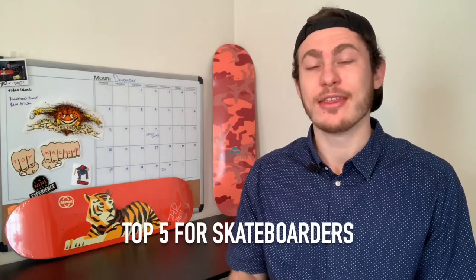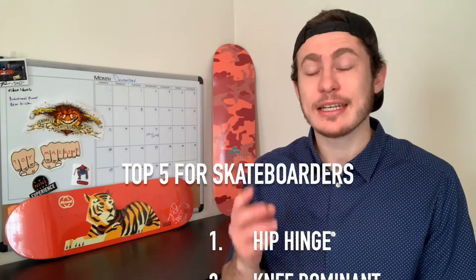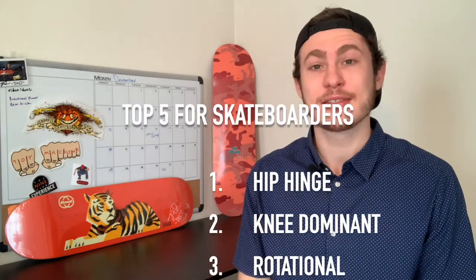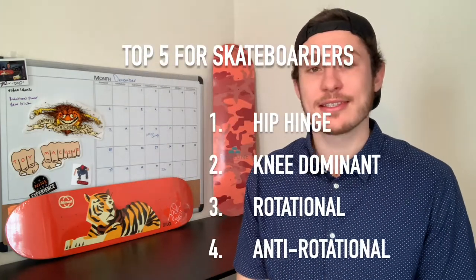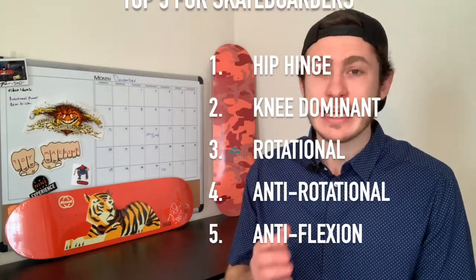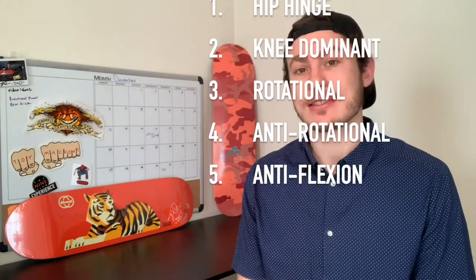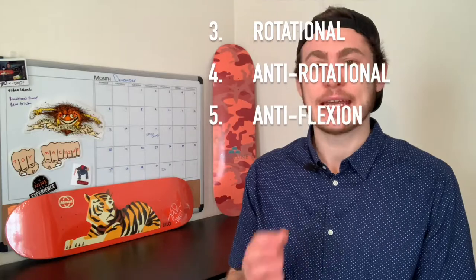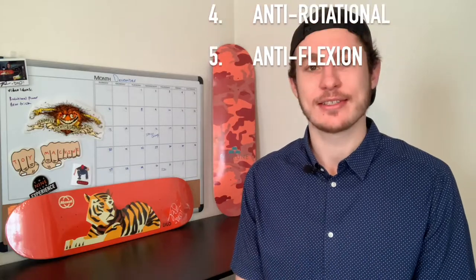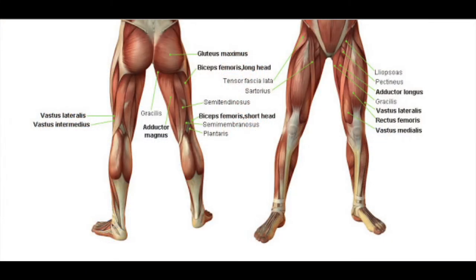My top five for skateboarders are the hip hinge, knee dominant movements, rotational exercises, anti-rotational exercises, and anti-flexion exercises. So let's start by talking about the hip hinge. First off, your hips are the driving force of your athleticism.